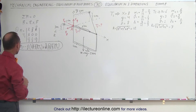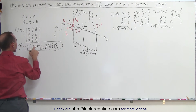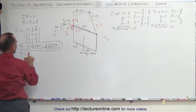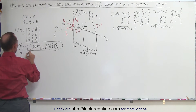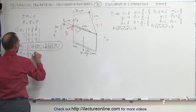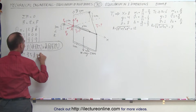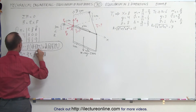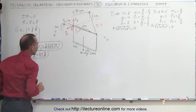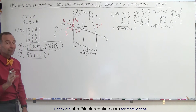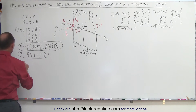Simplifying, the moment caused by cable one is: M₁ = (16/3)·T1·j + (8/3)·T1·k.